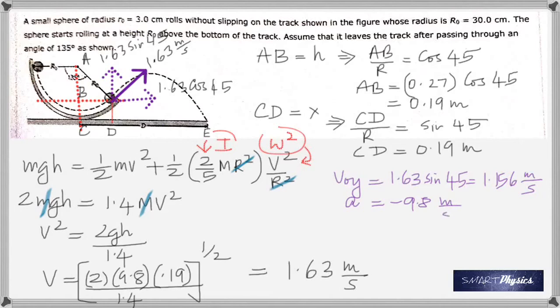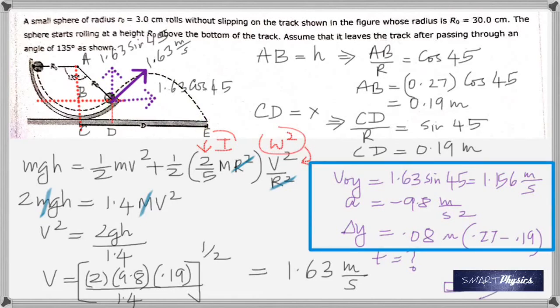Delta y is going to be negative 0.08 meters. Why negative? Because it's going below where it started. It starts from here and goes below, so it's negative 0.08.